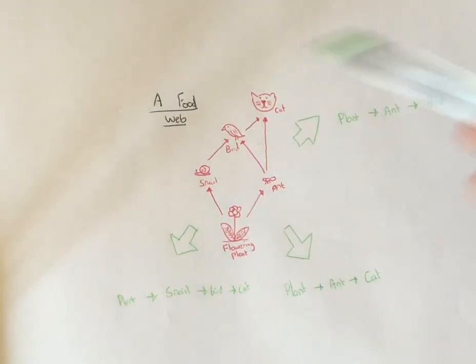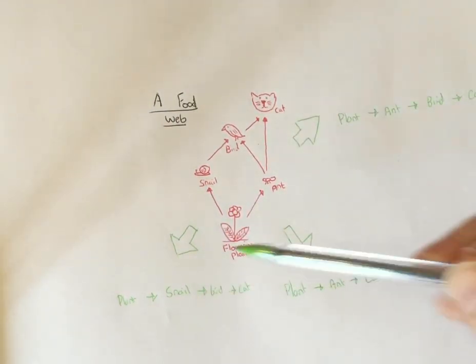So hidden inside our simple food web is in fact three food chains.